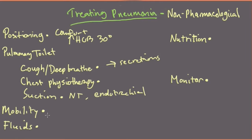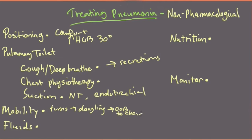Mobility is a very important aspect of treating pneumonia, just as it is for preventing it. If you can get the patient moving earlier — even if it's just turning — you progress from turns, to dangling at the edge of the bed, then out of bed to a chair, and eventually ambulating. All of these actions help the patient clear secretions, maintain a more patent airway, and recover from pneumonia much more quickly than if you just let them lay in bed.